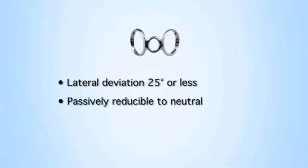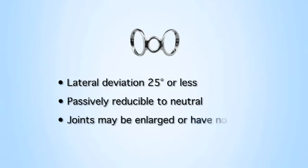The boutonniere splint may be used on fingers that have lateral deviation of 25 degrees or less, are passively reducible to neutral, and the joints may be enlarged or have nodules.